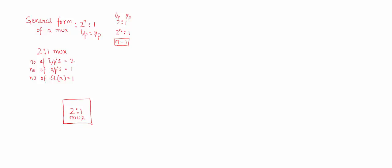If I represent the 2-to-1 MUX by this block, then I know there are 2 inputs d0 and d1, there is one select line s, there is one output y, and one enable input. This is your block diagram or the logic symbol. Let us see how to write the function table of the 2-to-1 multiplexer.